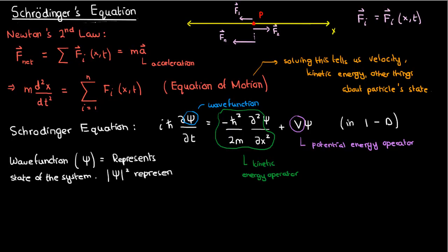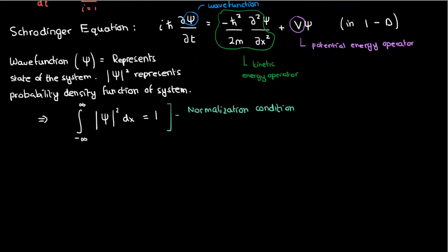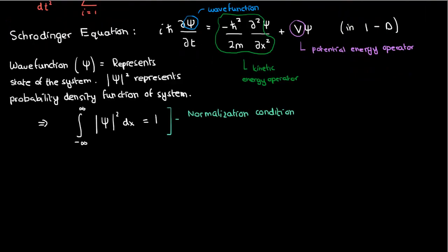The square of the norm of the wave function gives you the probability density function of the particle. If you integrate this norm squared over the entire domain, you'll get 1 — just like saying that adding the probabilities of all possible events gives you 1, or 100%. This normalization condition is the analog for continuous functions, so instead of adding, you integrate.